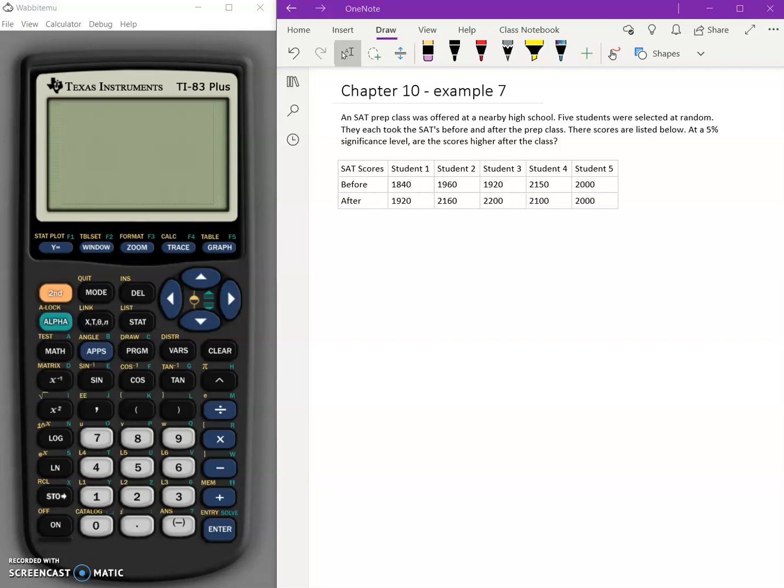So this is an example of matched paired samples. Our null hypothesis in this case is that the difference is going to be equal to zero. There's no difference between these students before and after - mu sub d equals zero.